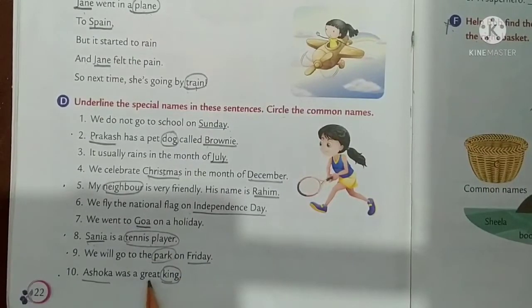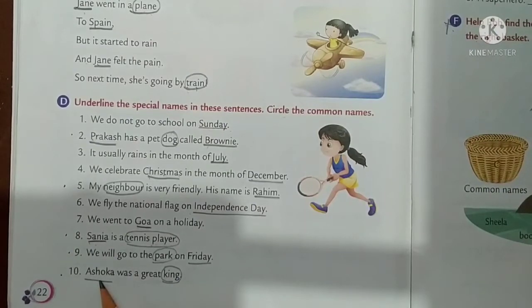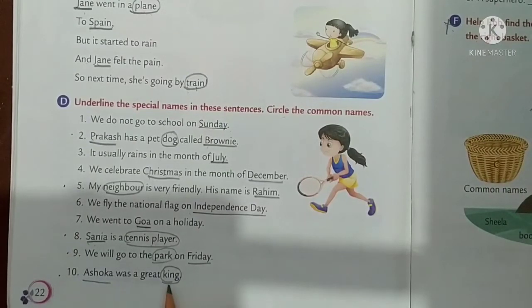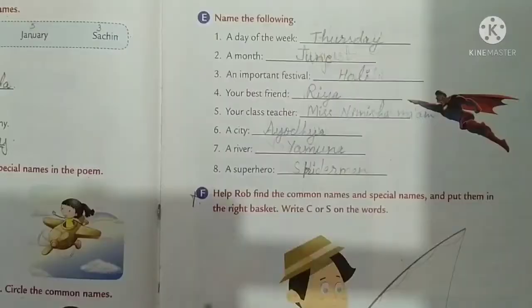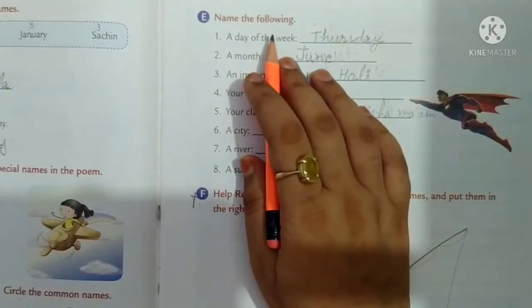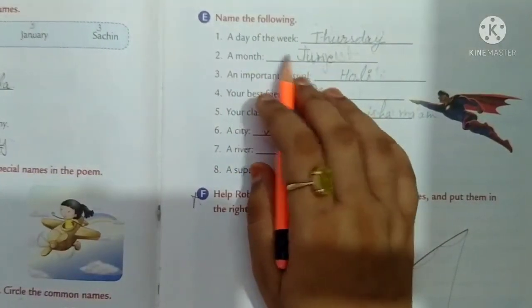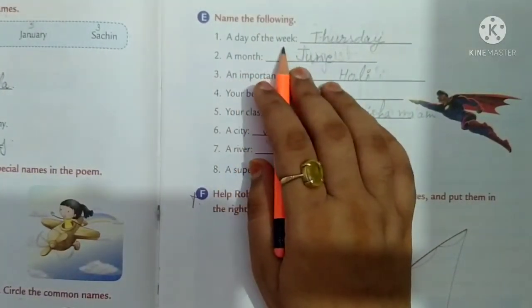Asoka was a great king. Asoka is a special name. King is a common name.